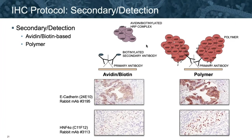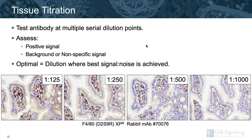When choosing which type of secondary detection to use, consider the increased amplification offered when using a polymer over avidin-biotin-HRP-based detection. In side-by-side testing, polymer-based detection consistently shows a more impressive positive signal. It's a good idea to initially titrate the antibody at multiple serial dilution points on a positive and negative model, or a model that includes both positive and negative tissue elements. Look for the presence of specific signal versus background or nonspecific signal. The optimal dilution is the point where the positive signal is as strong as possible and any background is alleviated.